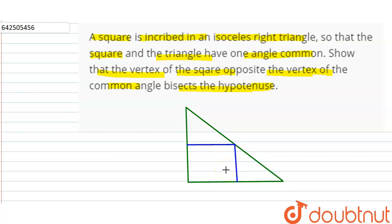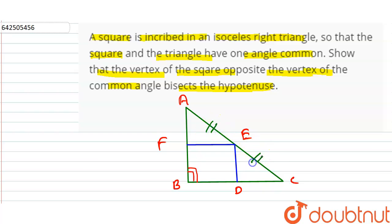Now we label the points: this is A, this is B, this is C, this is D, this is E, and this is F. This angle at B is 90 degrees. We have to prove that AE equals EC, so that E is the midpoint of the hypotenuse AC.